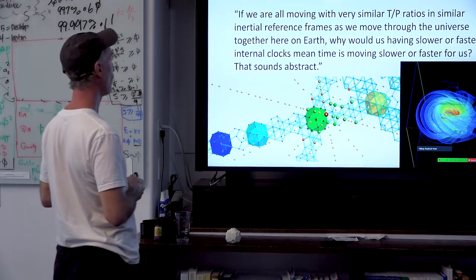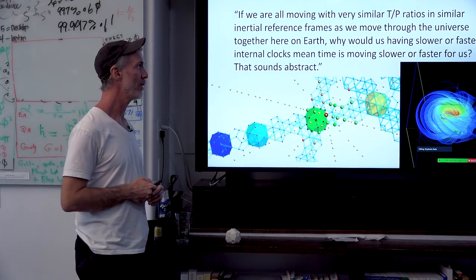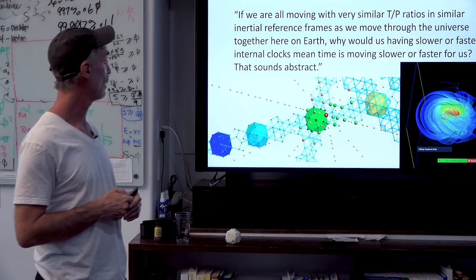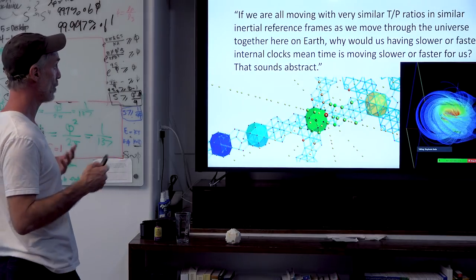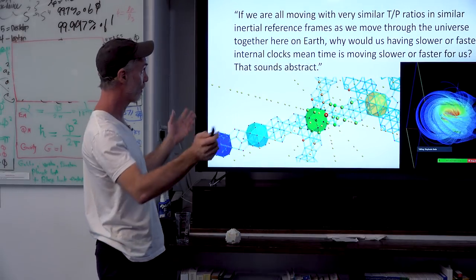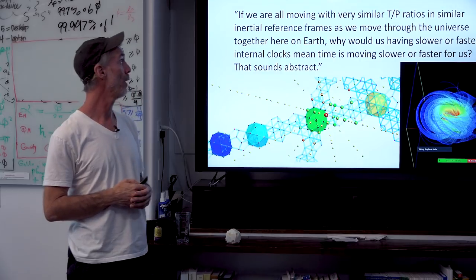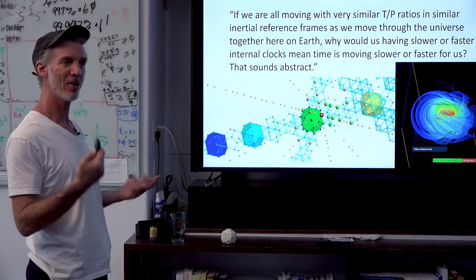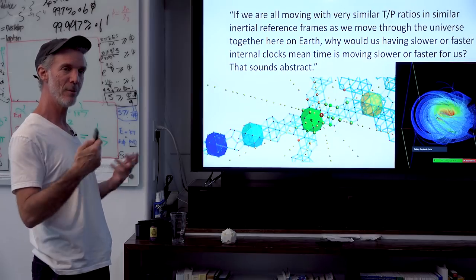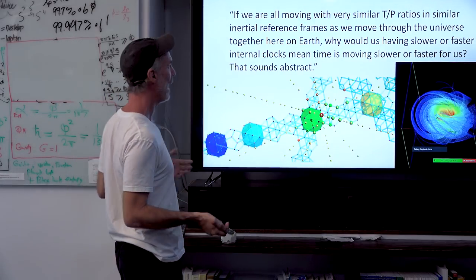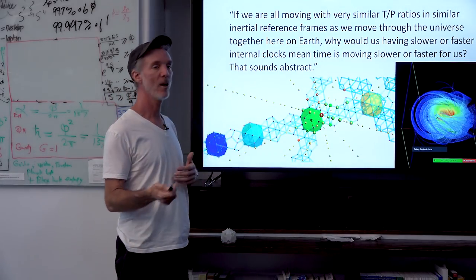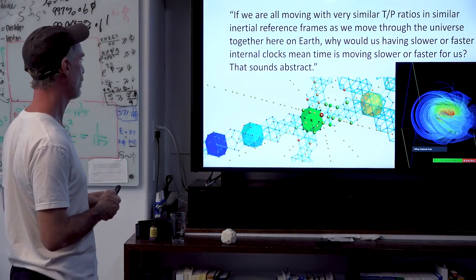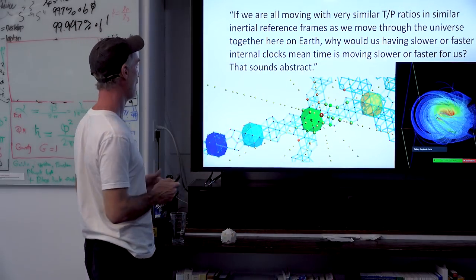You may be asking: if we're all moving with very similar T over P ratios in similar inertial reference frames as we move through the universe together here on Earth, then why would us having slower or faster internal clocks — this abstract idea — why would that mean that time is moving slower or faster for us in any reasonable sense? Because that sounds very abstract.